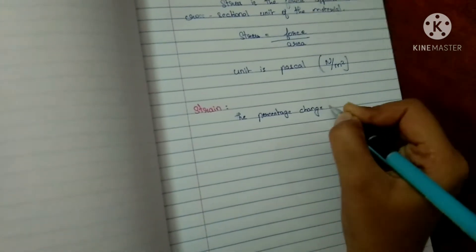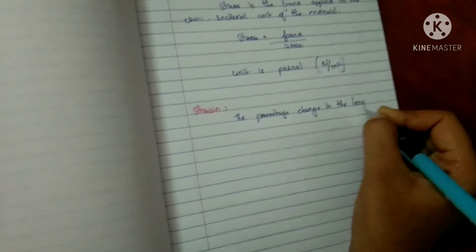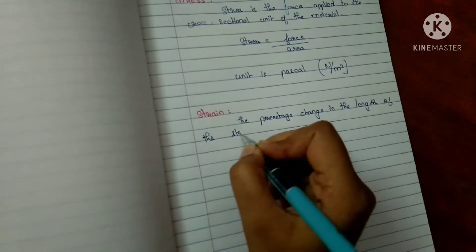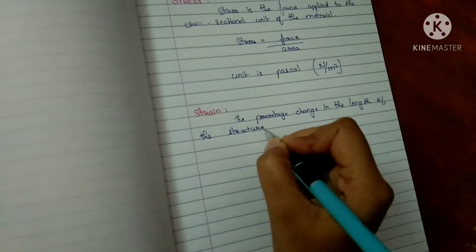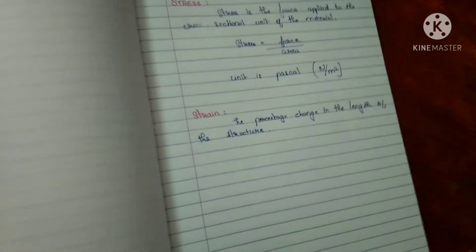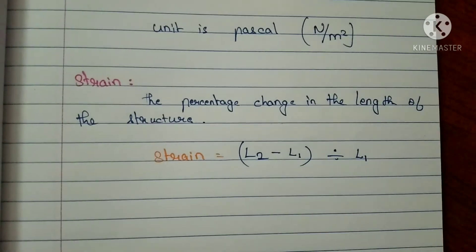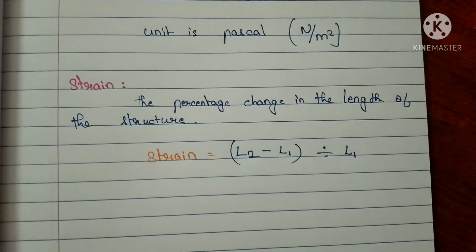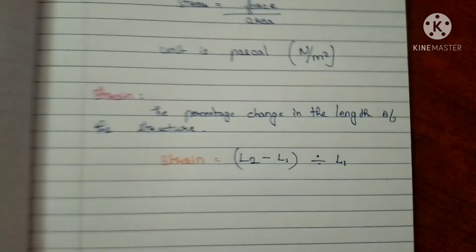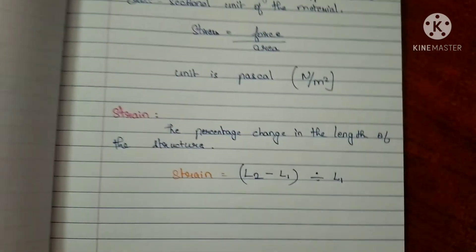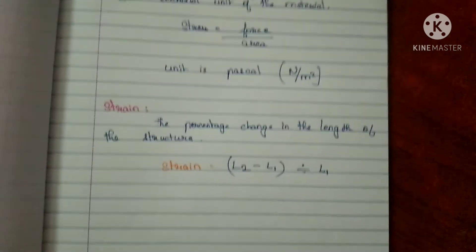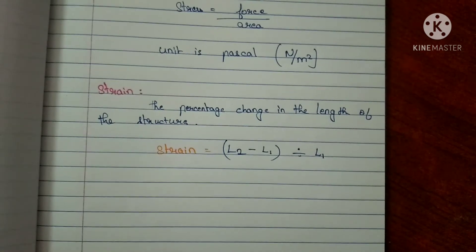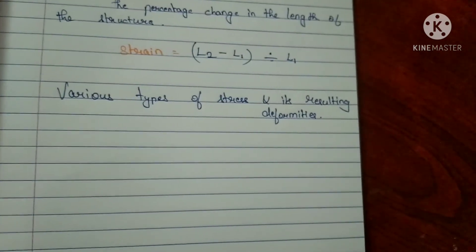Strain is the percentage change in the length of a structure or material due to the action of stress. When stress is acting, the material changes its length. Strain is expressed as a percentage using the formula: final length minus initial length, divided by initial length — where the final length is L2 and initial length is L1.